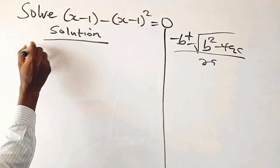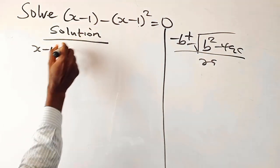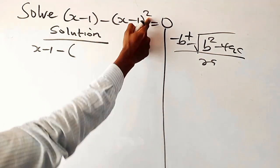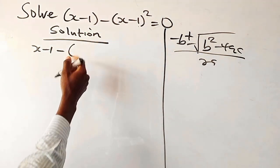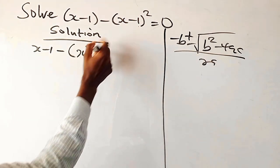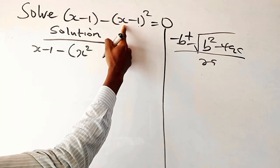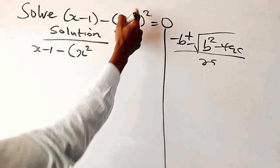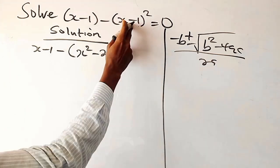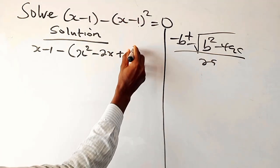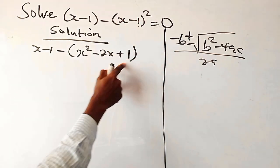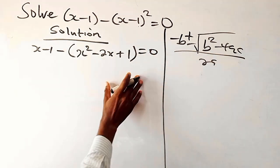Here we have x minus 1. When you look at the bracket, you have x minus 1 squared. We open it up by saying x squared — when you take the square and multiply it by 2, you have minus 2x, plus 1. The square root of 1 is 1, equals to 0.